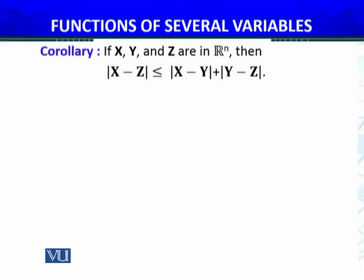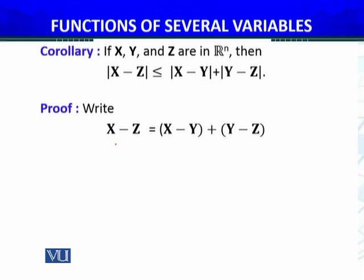Then we will move on to a corollary. If X, Y, and Z are three vectors from the Euclidean space R^N, then the magnitude of X minus Z is always less than or equal to the magnitude of X minus Y plus the magnitude of Y minus Z.